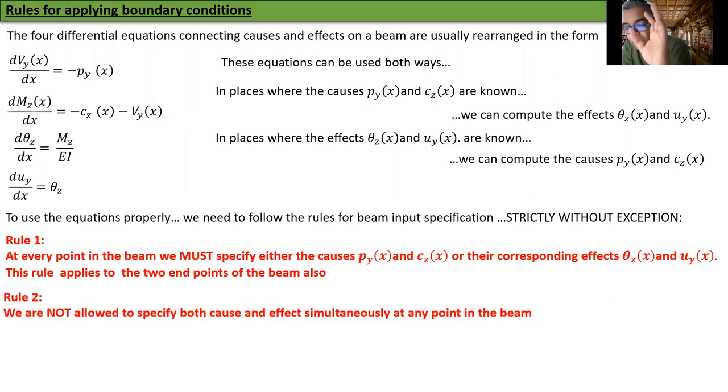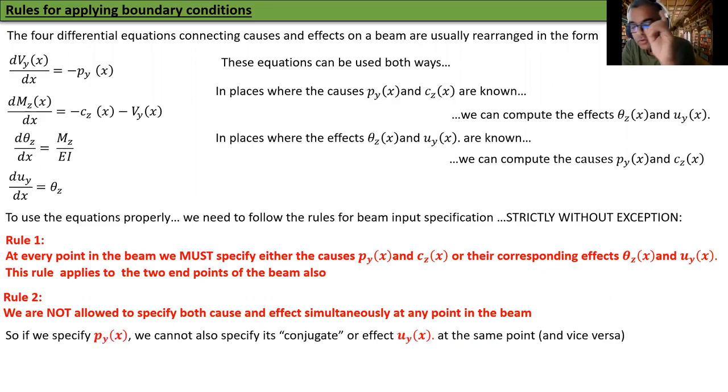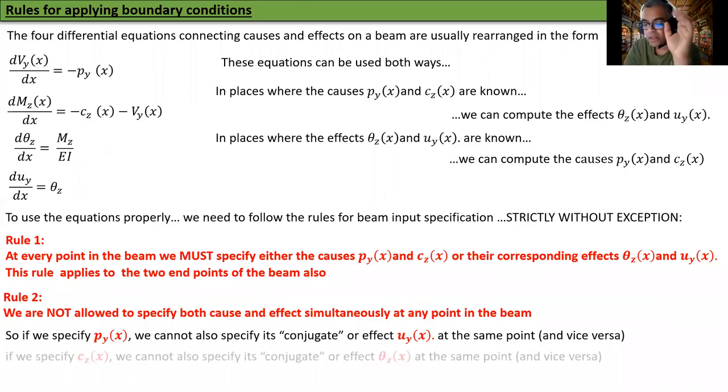Rule number two. We are not allowed to specify both cause and effect simultaneously at any point in the beam. So if we specify PY, we cannot also specify its conjugate or effects UY at the same point. If we specify CZ which is the external couple, we cannot also specify its conjugate or effect theta z at the same point and vice versa.